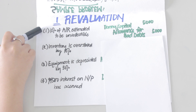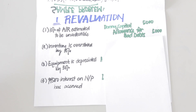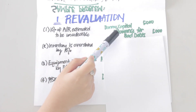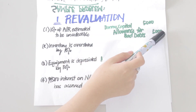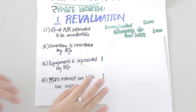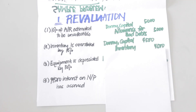First, 10% of accounts receivable is estimated to be uncollectible. Under normal circumstances the adjusting entry would require a debit to bad debts expense and a credit to allowance for bad debts. However, in this case, all adjustments requiring nominal accounts must be closed directly to the capital account. The correct entry is to debit Danny capital and credit allowance for bad debts for 10% of 50,000, or 5,000 pesos.